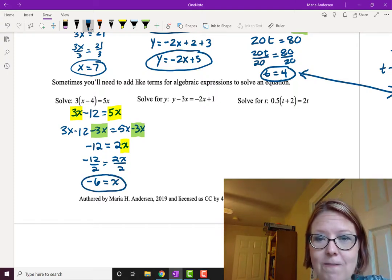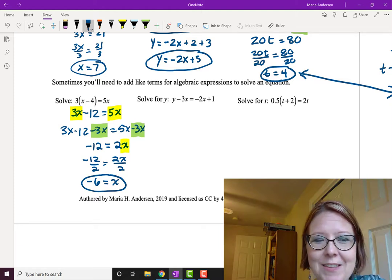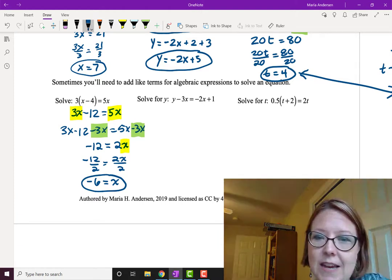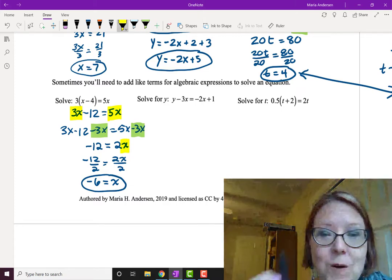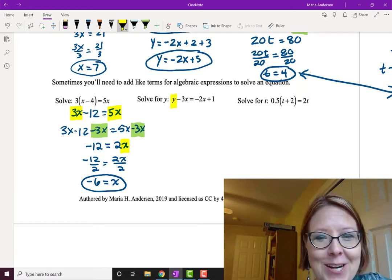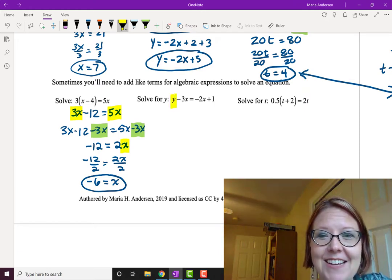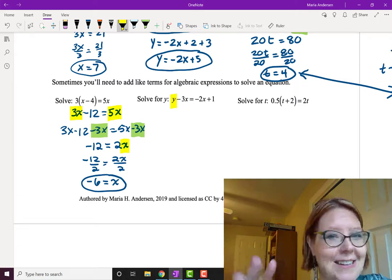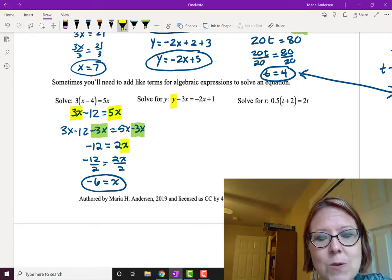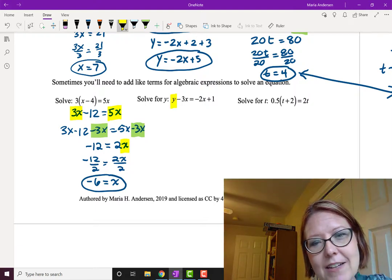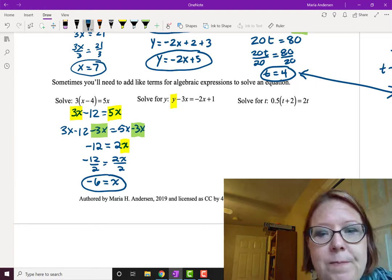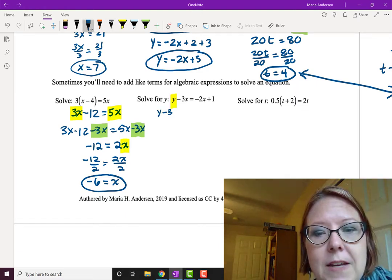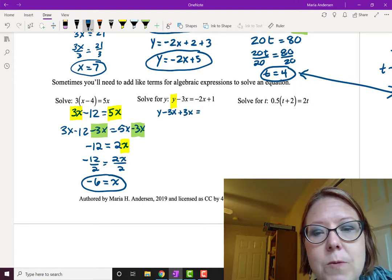In the next equation, we're going to solve for y, so we've got more than one variable here. The equation is y minus 3x equals negative 2x plus 1. Now I'm solving for y. Again, I find it super helpful, especially when you're starting out, to highlight the variable you're solving for so that you don't accidentally get into trouble trying to solve for something else. So if all I need to do is isolate the y, I can add 3x to both sides to do that. So I'm going to rewrite this line.